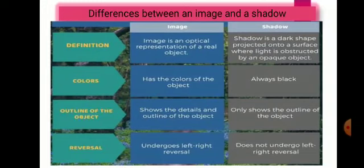Lastly, the differences between an image and a shadow. An image is an optical representation of a real object, whereas a shadow is a dark shape projected onto a surface where light is obstructed by an opaque object. In terms of color, an image has the color of the object, whereas a shadow always stays black. An image shows the detail and outline of the object, whereas a shadow shows only the outline. In terms of reversal, an image undergoes right-left inversion (lateral inversion), whereas a shadow does not undergo any inversion.